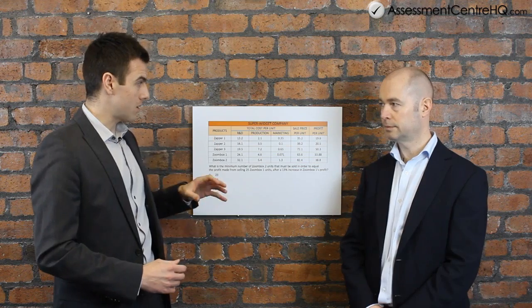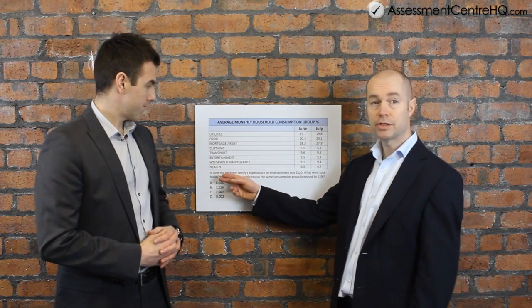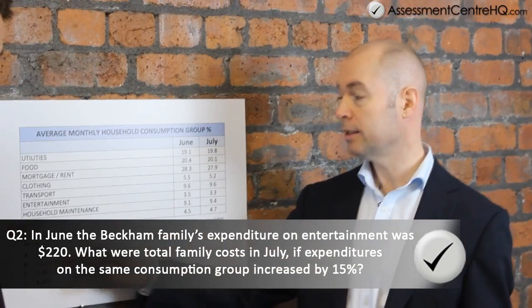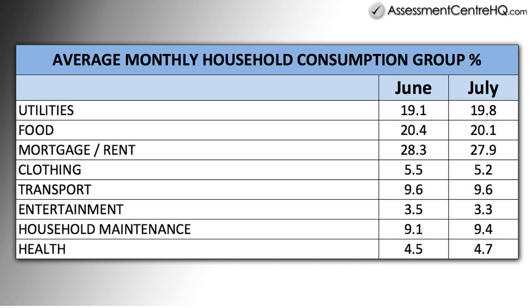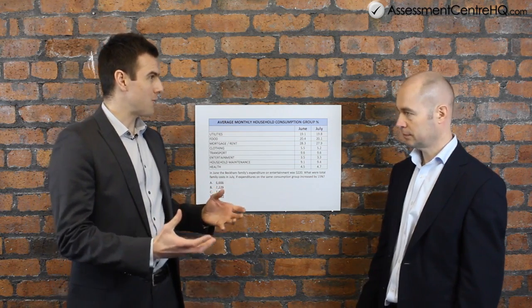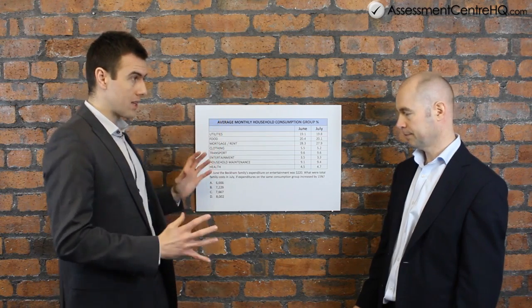So far we've gone through three steps: managing your time carefully, starting with the question, and seeing-sawing back and forth between the data and the question. Let's move on to another question. John's going to take us through another example. So, looking at the question again — that's the first thing we need to do, read the question: 'In June, the Beckham family expenditure on entertainment was $220. What were the total family costs in July if expenditure on the same consumption group increased by 15%?' So immediately, I can narrow down what I'm looking at to entertainment and these two figures — we want to know June and July.